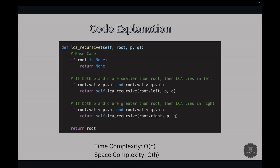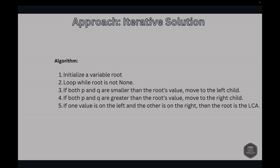The time complexity is O(H), because the function traverses the tree from root to the lowest common ancestor. In the worst case it traverses the height H of the tree. For a balanced BST, height is approximately O(log N) where N is the number of nodes; for a skewed tree, height can be as large as O(N). Space complexity is also O(H), determined by the recursion stack depth. For a balanced tree this is O(log N), and for a skewed tree it is O(N).